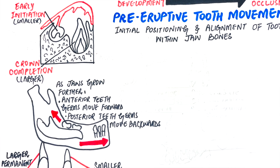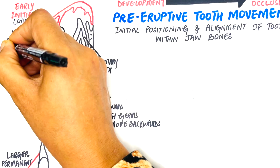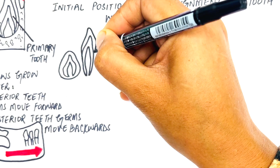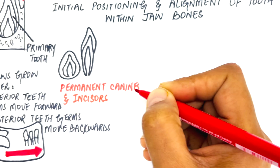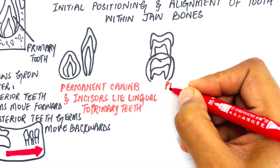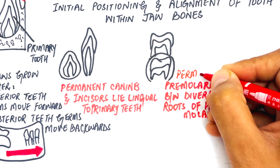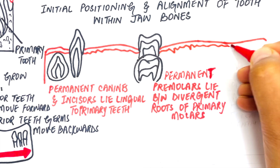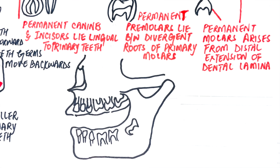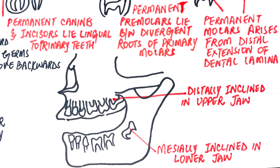The permanent tooth germs initially lie lingual to the primary tooth germs in the same bony socket or bony crypt. As the jaws grow further, the tooth germs for the permanent canine and incisors occupy individual bony crypts and are positioned at the root levels of the primary teeth. The permanent tooth germs of the premolars lie between the divergent roots of the primary molars, and the permanent molar, which has no predecessor, arises from the distal extension of the dental lamina. It has a mesially inclined position in the lower jaw and a distally inclined position in the upper jaw, straightening as the jaws grow and sufficient room is provided.